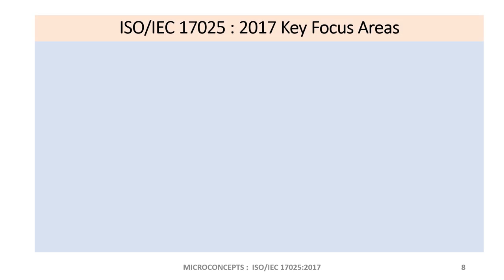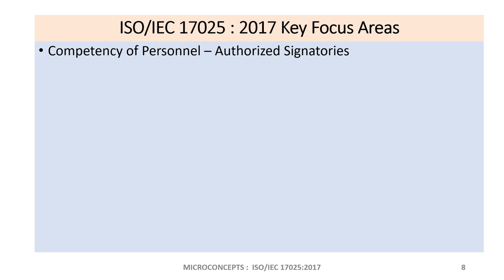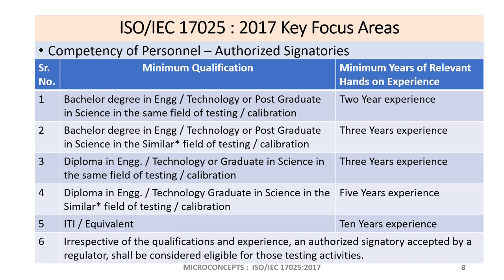The next key focus area in ISO 17025 is competency of personnel, mainly authorized signatories — those who will authorize test reports or calibration certificates. NABL 165 is the guideline published by NABL which provides these guidelines. Generally, an authorized signatory should have some minimum qualification and minimum experience with respect to their qualification. Even an ITI-qualified person who has been carrying out the same activity repeatedly for 10 or more years can become an authorized signatory if they satisfy the assessors through technical queries.